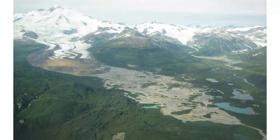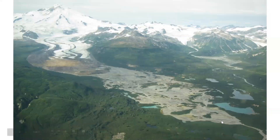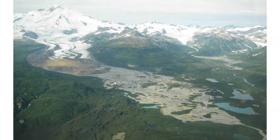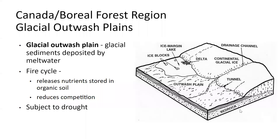Lastly, we'll talk about glacial outwash plains. You can see the glacier receding up — a river of ice coming down from mountains. As this glacier has retreated, it's left a wash of coarse soil and gravel that's fairly wet with some streams coming through, and you can see the forest types that grow there. Glacial outwash plains are formed when glacial sediments are deposited by meltwater. You've got ice blocks that sometimes make little kettle lakes, and this outwash plain is a very common feature of these environments. The fire cycle is important here — it releases soil nutrients stored in organic soil and reduces competition. These are very well-drained sites subject to drought.